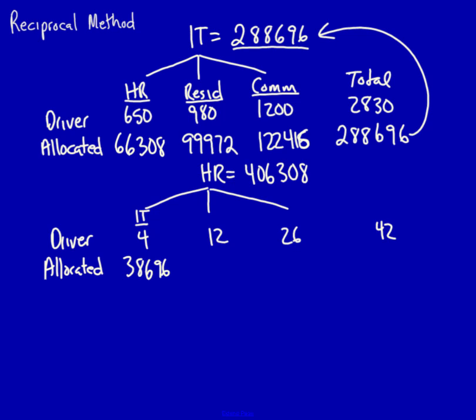12 divided by 42 multiplied by the amount of human resources is equal to 116,088.